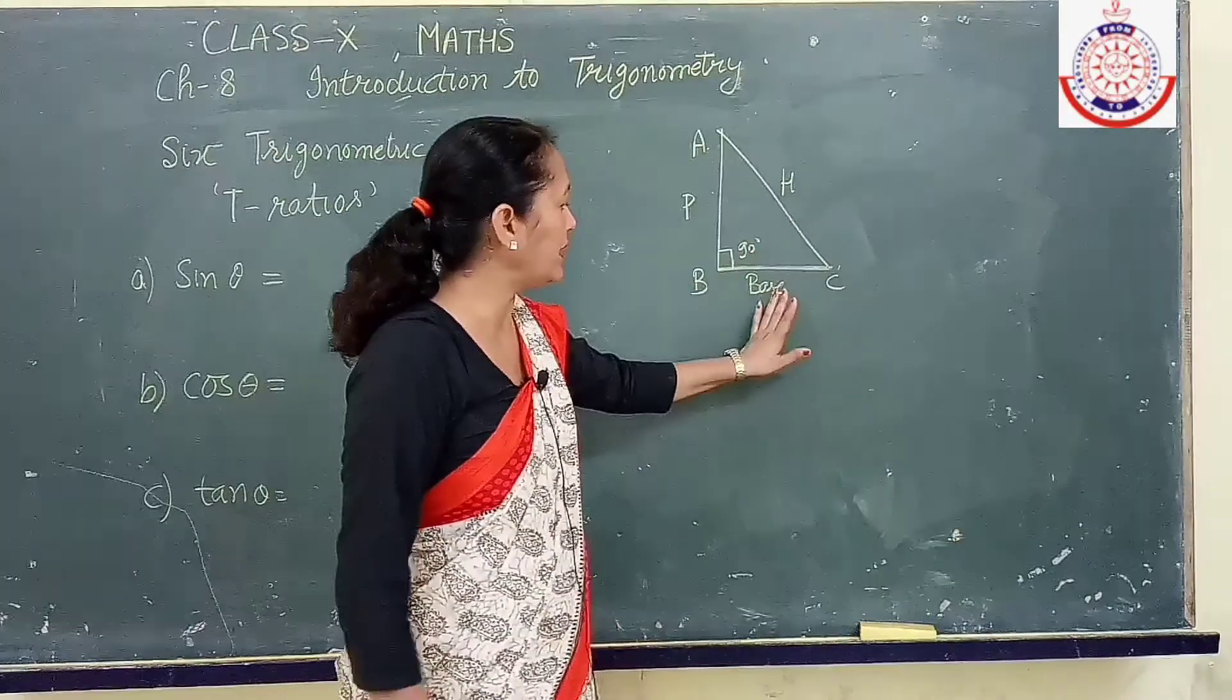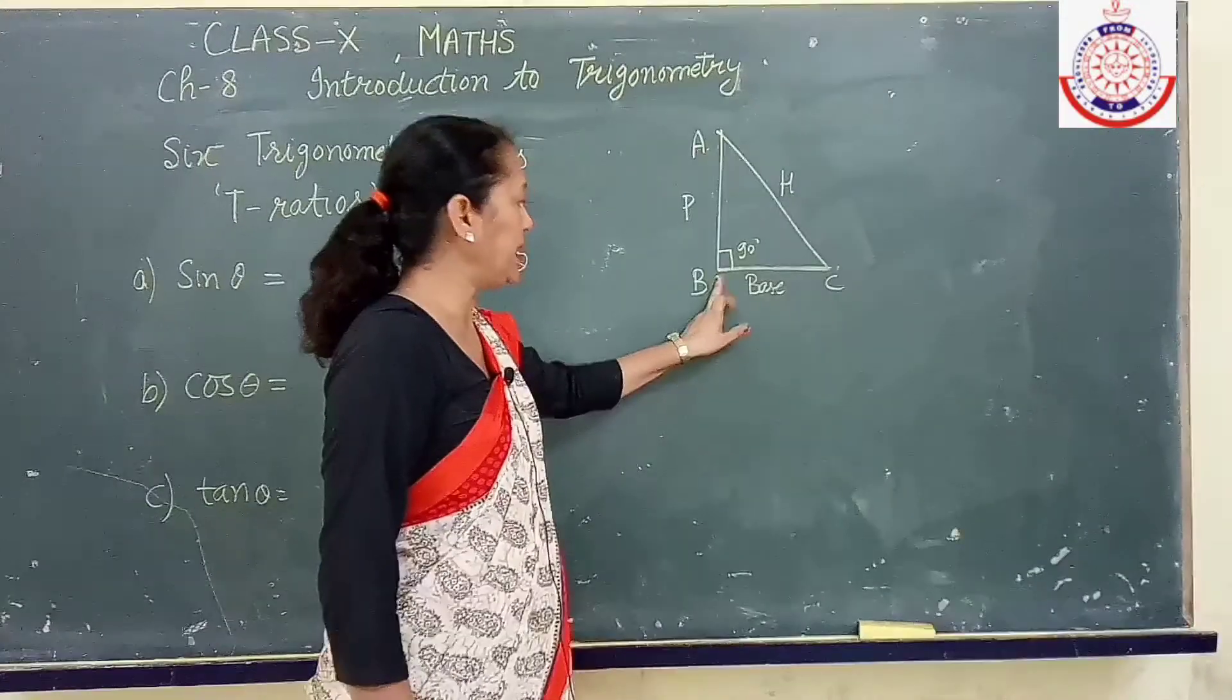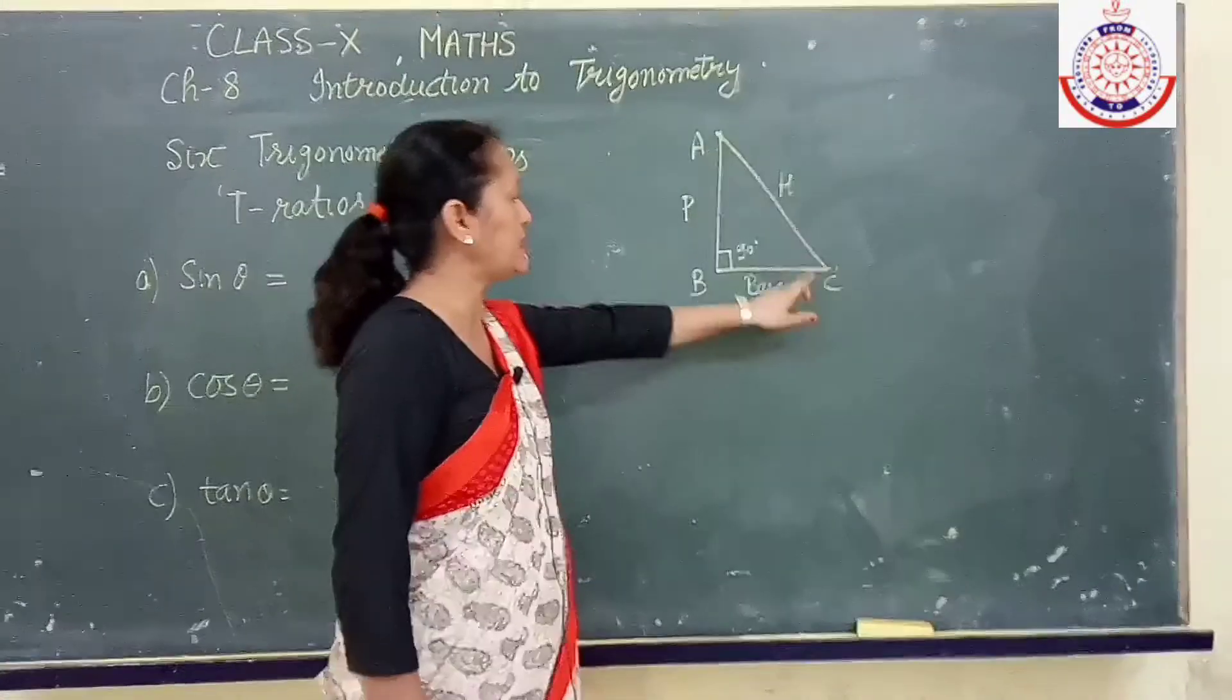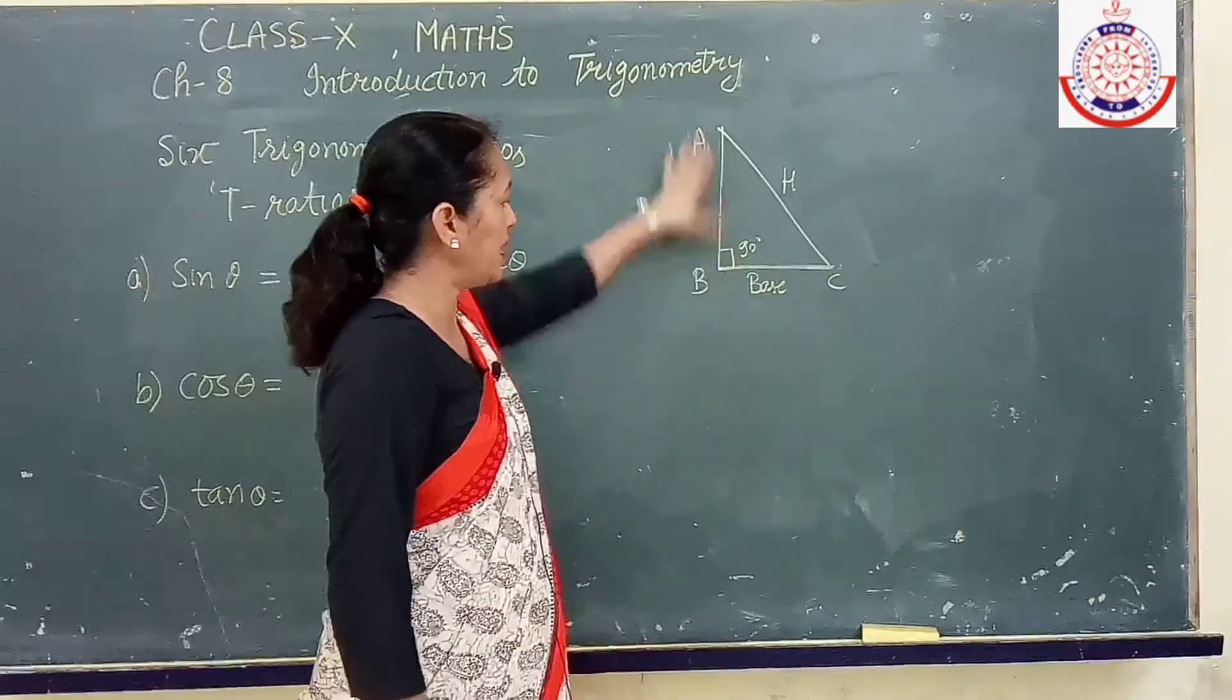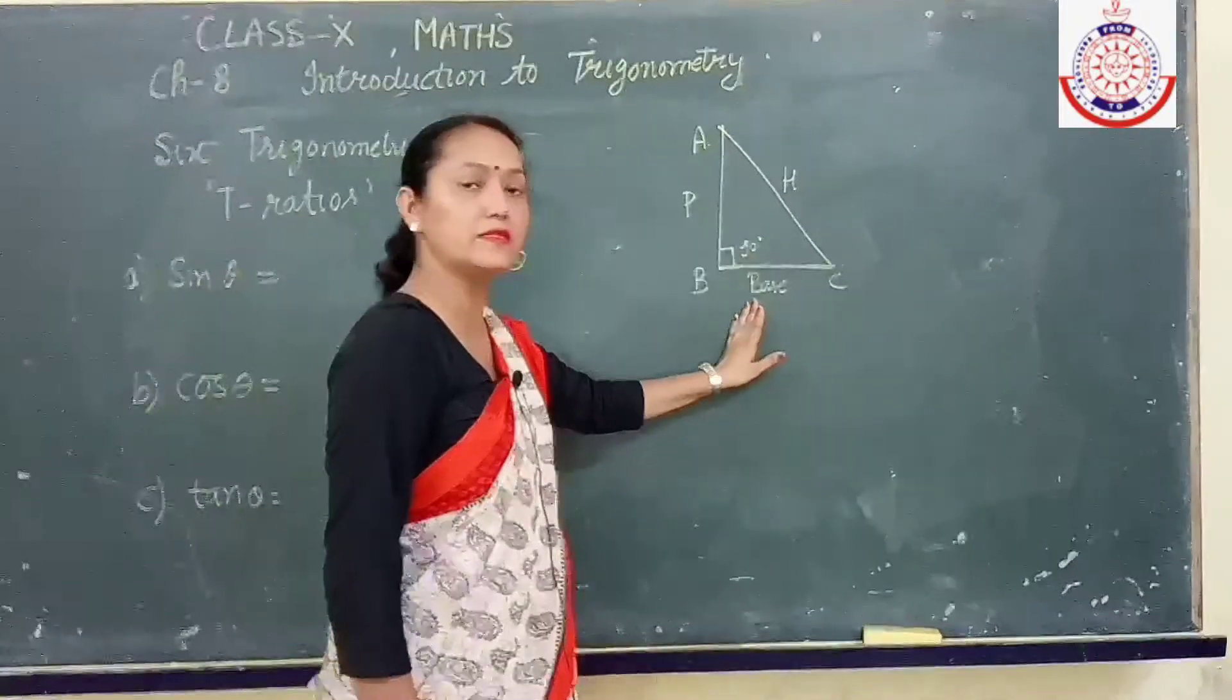To understand our topic more clearly, let us take one right angle triangle, where at point B, 90 degree is being formed. Other points are A and C. This AB is perpendicular, AC is hypotenuse and BC is base.